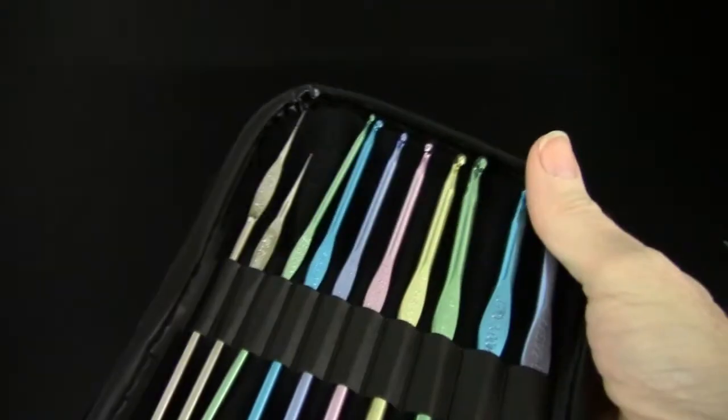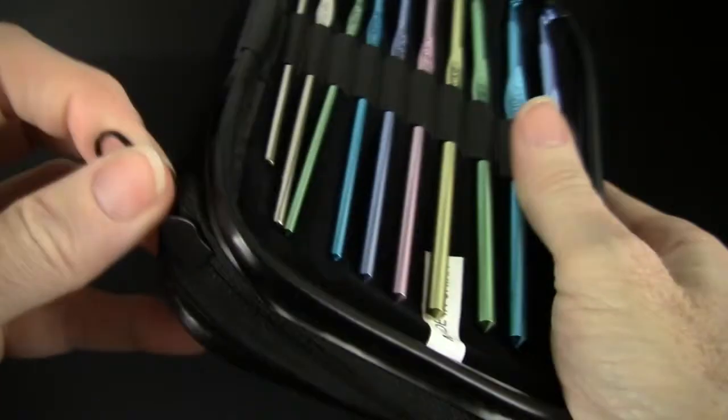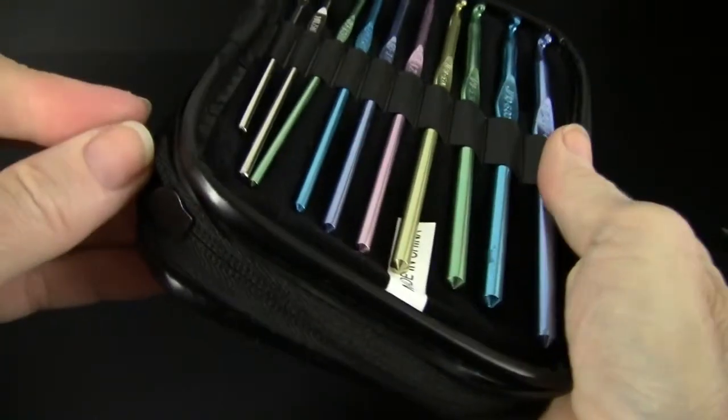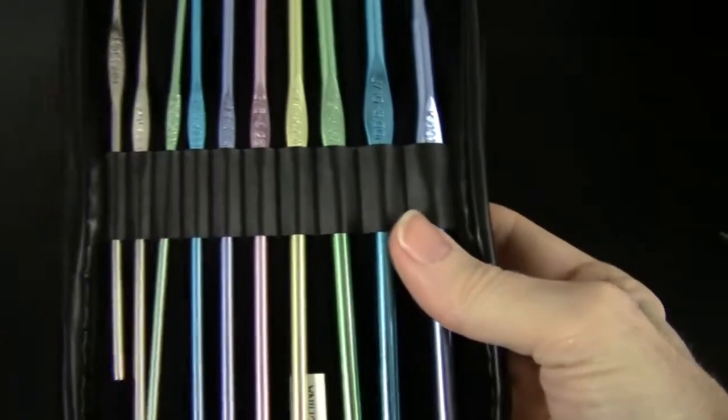When you pop it open, the hook case is turned inside out basically, so that you can see the hooks on both sides. So exciting! Let me unzip this.